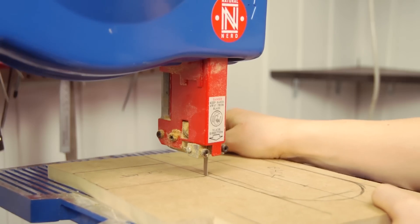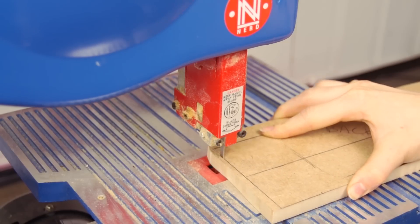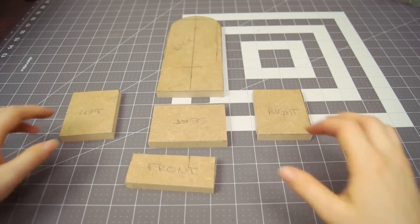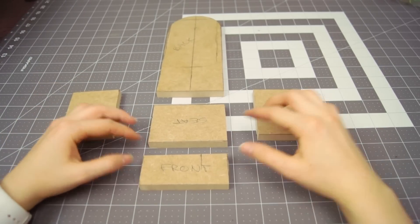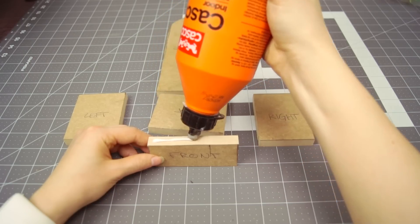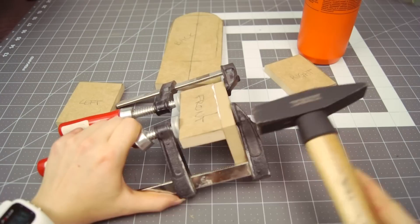Finally I cut out all the pieces with a bandsaw. The back, the seat and the sides of the throne. Here are all the pieces. I used both wood glue and tiny nails to attach the pieces together.